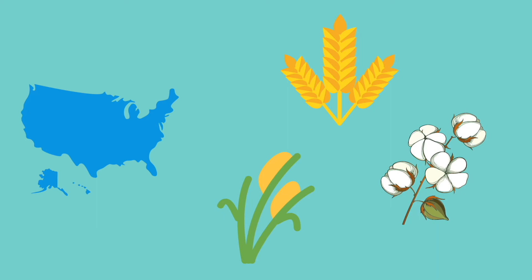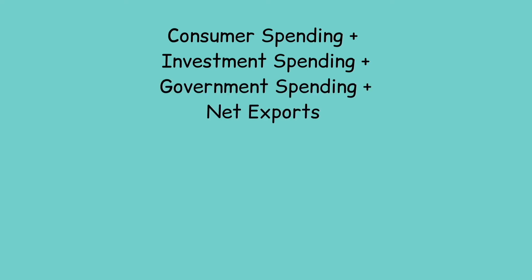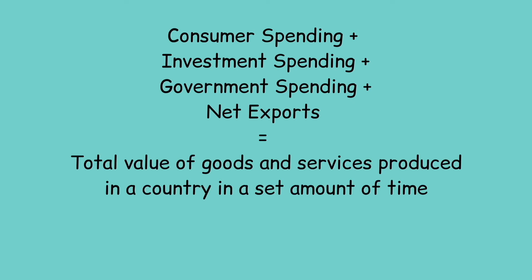When we add up consumer spending, investment spending, government spending, and net exports, we get the total value of goods and services produced in a country within a set amount of time. That's GDP.